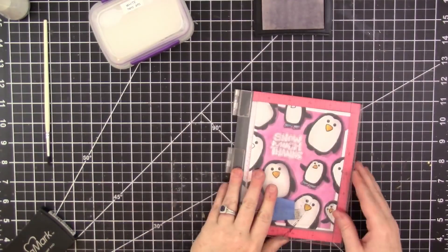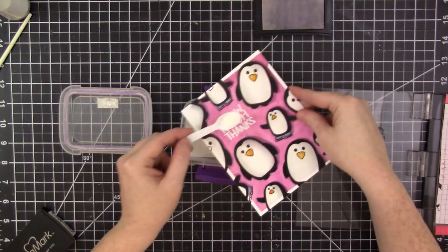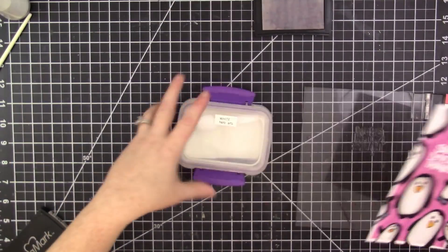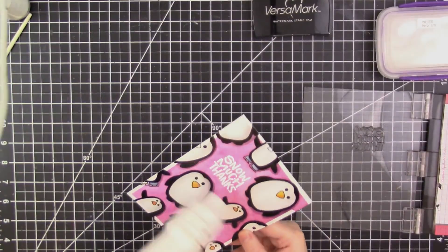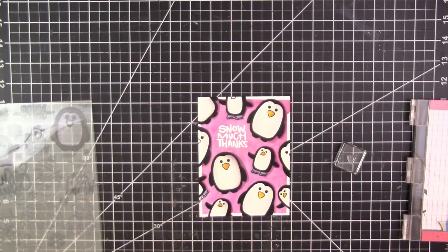Which is one of the reasons why I love my MISTI and highly recommend it, because I can just stamp right over it again, apply more embossing powder, and then I'll get this really thick bright white embossing that really makes the sentiment just stand out really well.